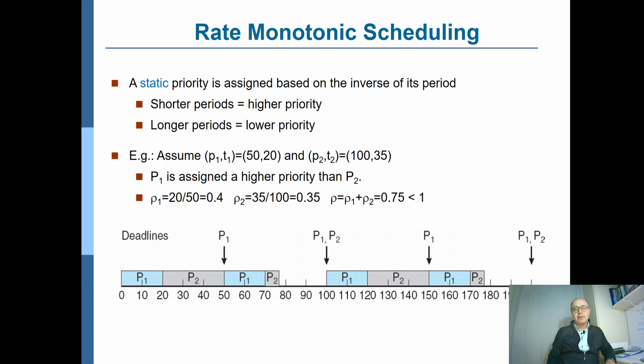In priority-based scheduling, the priority of the process is determined according to the importance of the process. However, you also need to consider the period of the process reappearing in the system because it also relates to the deadline of the process.